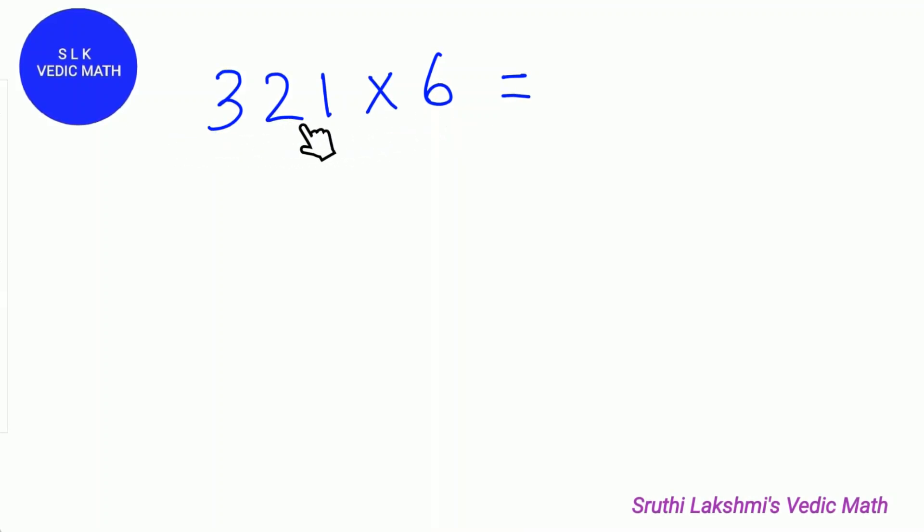Let's try 321 times 6. 321 is an odd number. If it is an odd number, we add 5 to the last digit. So 5 plus 1 is 6. So we write down 6.